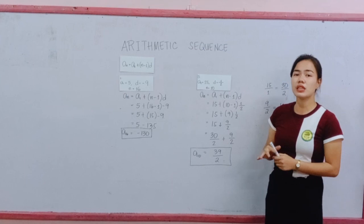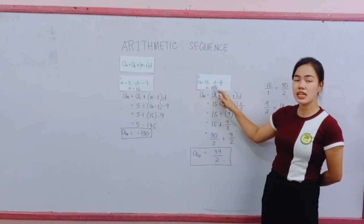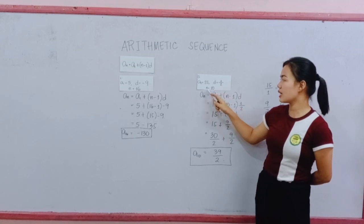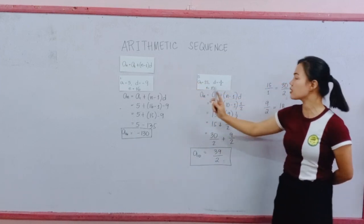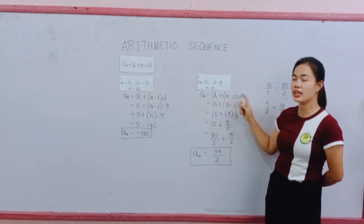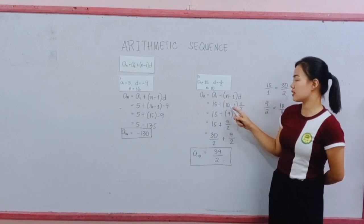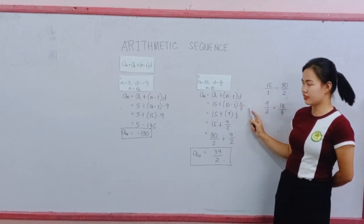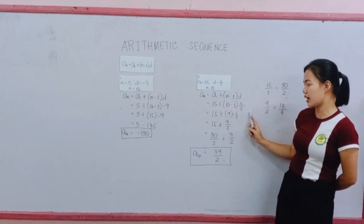For example number 5, our A sub 1 is 15. Our D is 1 half. Our N equals 10. Use the formula for arithmetic sequence. A sub N equals A sub 1 plus N minus 1 times D. Our A sub 1 is 15 plus 10 minus 1 times 1 half.